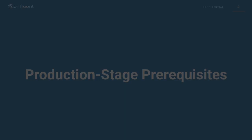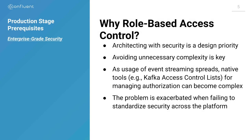First in the production stage prerequisites is role-based access control. Without RBAC, you're limited to managing authorization through ACLs — access control lists — where there's one principal that can access a topic or write it or read it. That's fine for small populations of users, but it gets completely out of hand once you get into the hundreds of principals. Role-based access control lets you group those principals into roles and then assign privileges to those roles as needed.